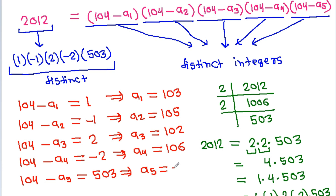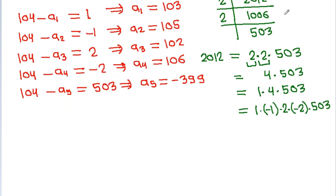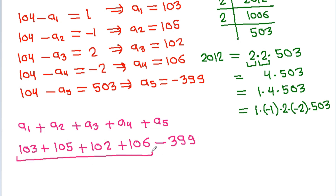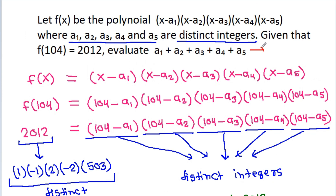104 minus 503 equals minus 399. So a1 plus a2 plus a3 plus a4 plus a5 equals 103 plus 105 plus 102 plus 106 plus (-399). This is 416 minus 399, which equals 17. So the answer is 17.